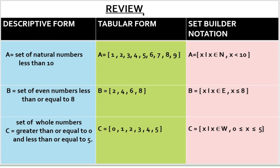Now let's review by comparing all three forms. In descriptive form, we write our set by means of a statement — sets A, B, and C are written as statements. In tabular form, we write the set within curly brackets separated by commas — sets A, B, and C are written listing elements. In set builder notation, we write the set using symbols — sets A, B, and C are written in set builder notation using symbols.